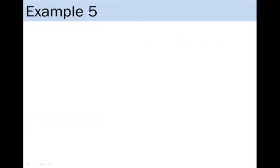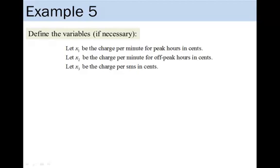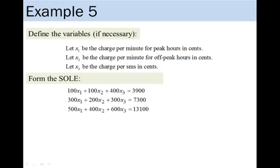Since we need to find the charges, we first define them as our variables. Next, we make use of the handphone usage and bill of the customer over the first 3 months to form 3 equations. For example, since the customer used his handphone for 100 minutes during peak hours, 100 minutes during non-peak hours, and he sent out 400 SMSs in the first month, and his bill for that month is $39, which is 3,900 cents, we have the first equation: 100x1 plus 100x2 plus 400x3 equals to 3,900. The second and third equations are formed similarly.